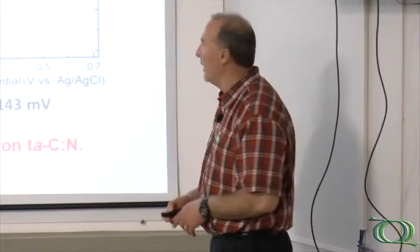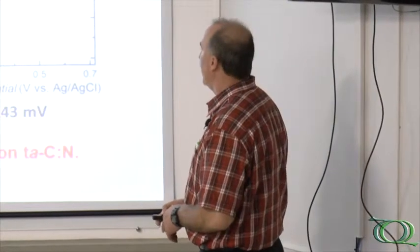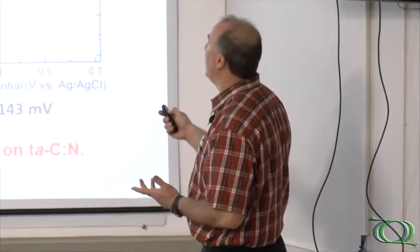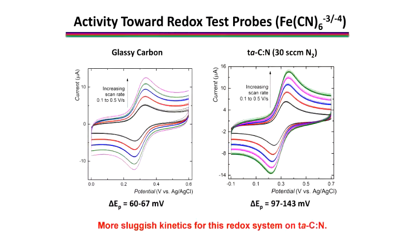We can look at the ferrocyanide system again, comparing glassy carbon on the left and TAC on the right. For glassy carbon that's well-conditioned, this system is almost Nernstian on that surface as the peak splitting is about 60 millivolts. You can see a much larger peak splitting for the TAC material. So the kinetics of this system are quite a bit slower on TAC than on glassy carbon, and the opposite is true for the ruthenium system.